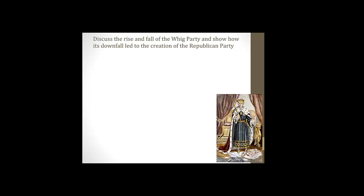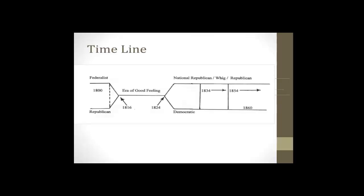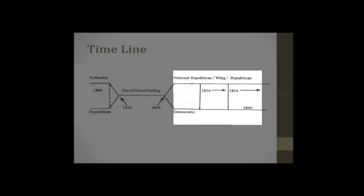In this learning objective we're going to discuss the rise and fall of the Whig Party and show how its downfall led to the creation of the Republican Party. Let's reorient ourselves on the timeline: 1834 is the founding of the Whig Party, the Democratic Party is its own party, so we'll have a reestablishment of the two-party system. The Whigs will last until about 1854, then we'll see the rise of the Republican Party out of the ashes of the Whig Party.